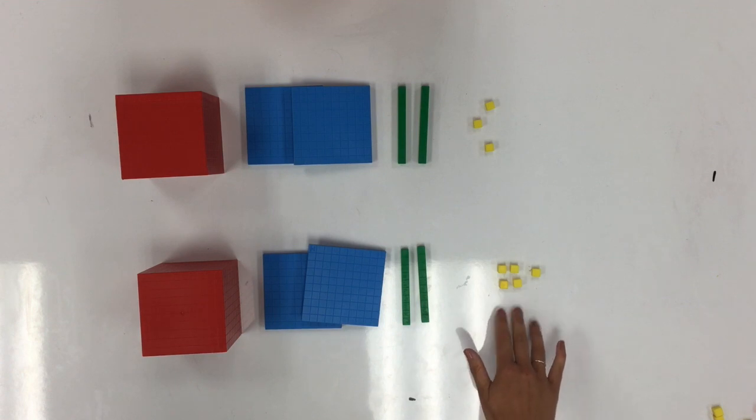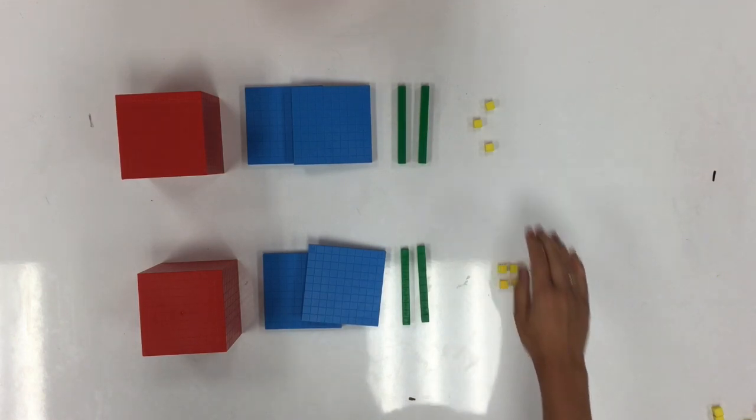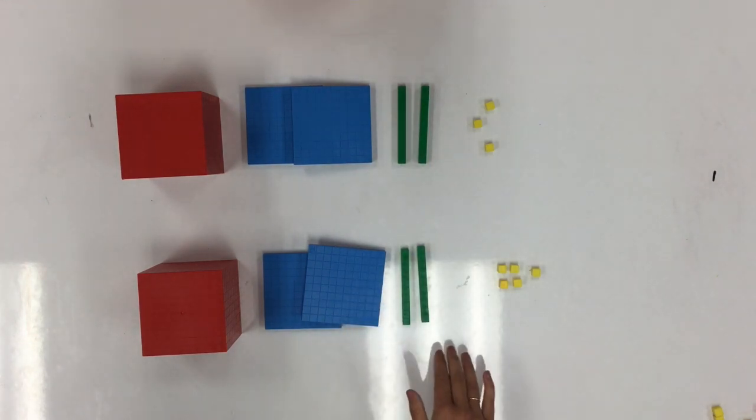Our bottom number has 5 in the ones place. Our top number has 3 in the ones place. We know that 5 is greater than 3. Therefore, our bottom number has the larger value.